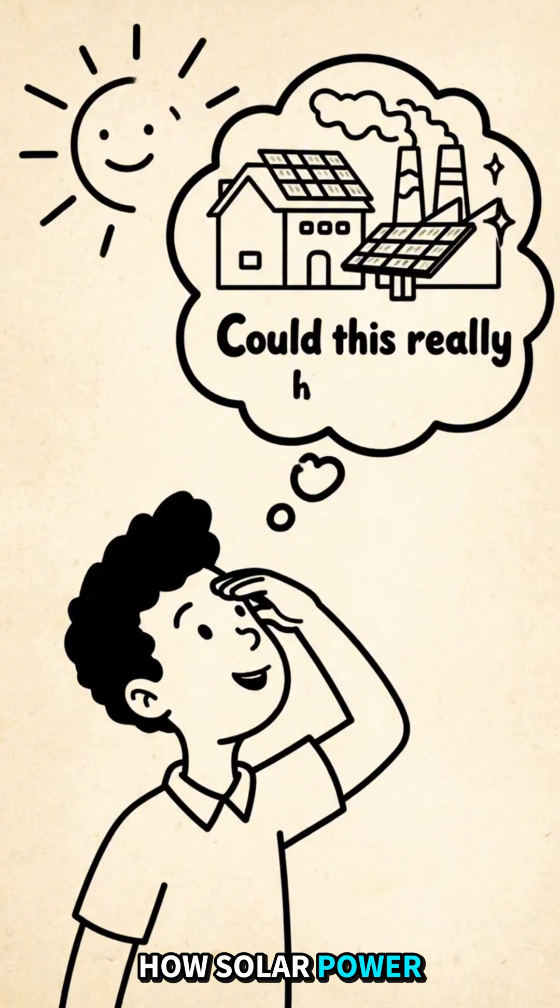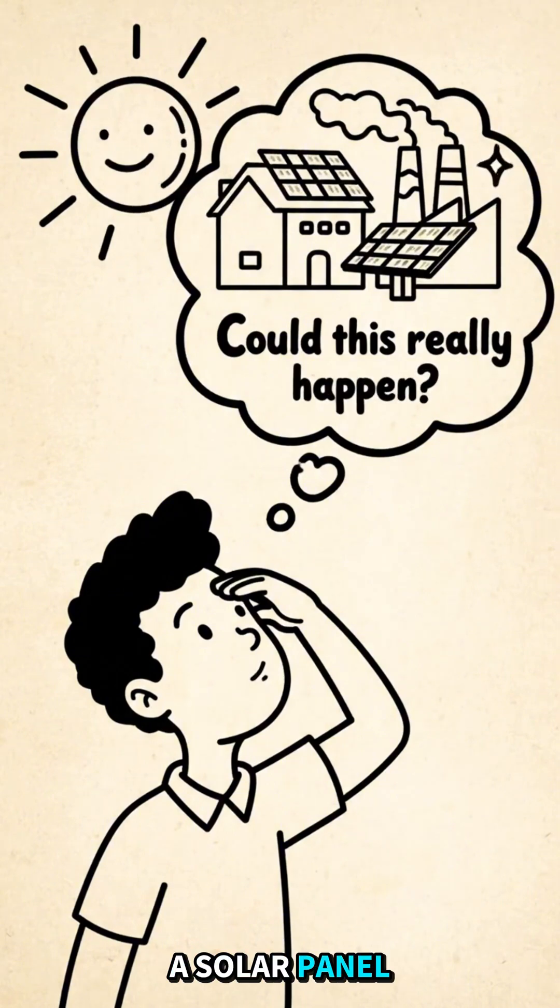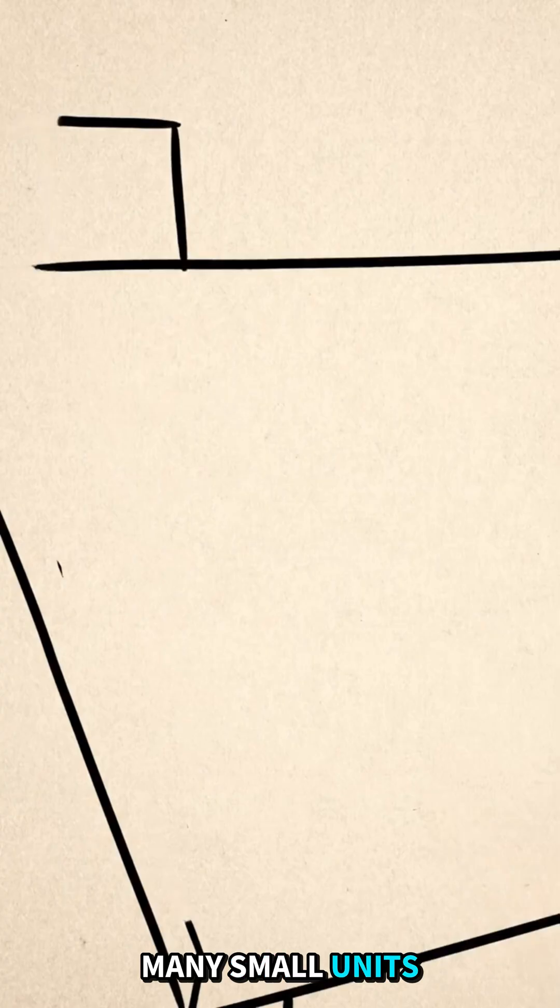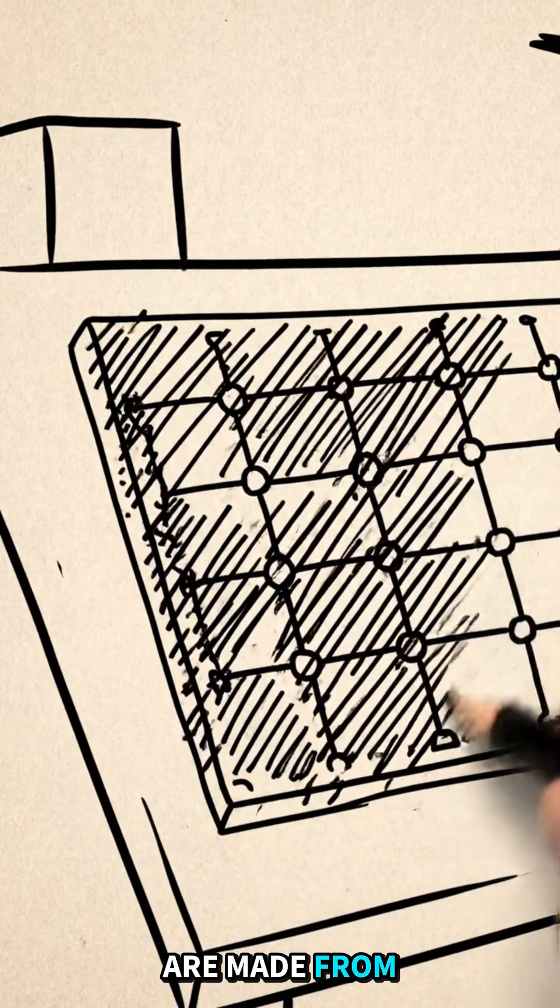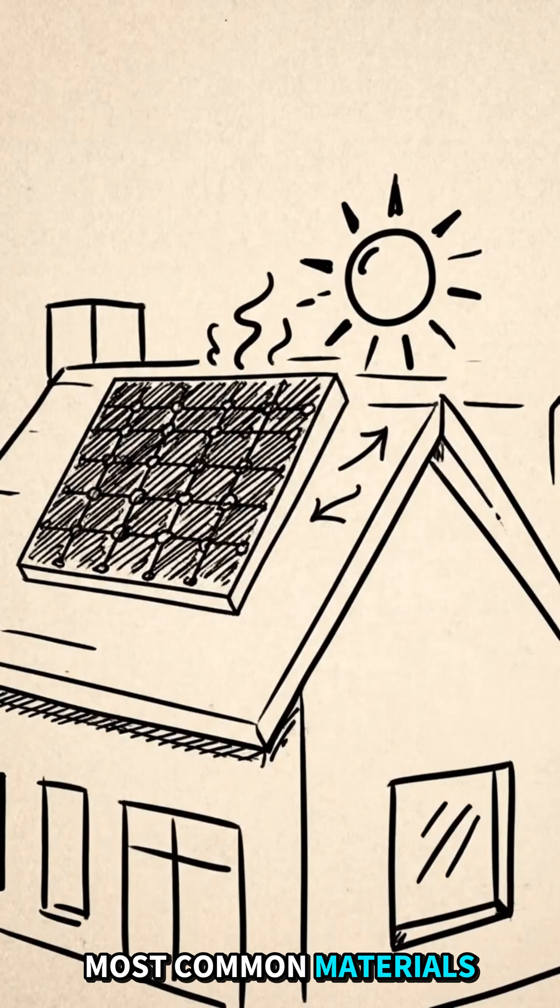Let's start with how solar power works. A solar panel is made of many small units called solar cells. Most of them are made from silicon, one of the most common materials on Earth.